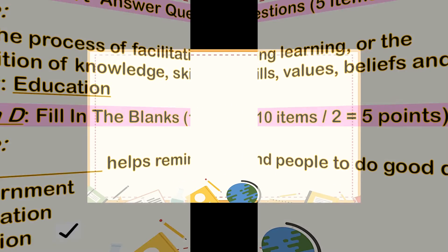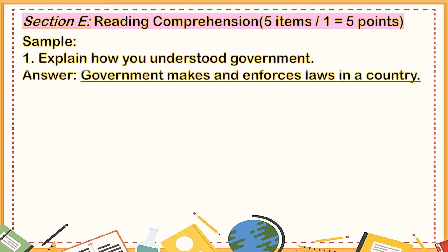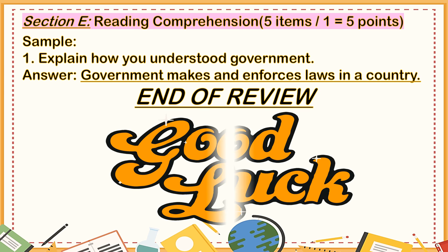For the last part, Section E is reading comprehension, 5 items divided by 1 equals 5 points. In reading comprehension, you have to read the paragraph and get your answer from the paragraph — you cannot write your own answer. I gave you a paragraph to read so I will know if you understood the comprehension. For example, 'Explain how you understood the government' — the answer is 'government makes and enforces laws in a country.' Here I am flexible; you can write your answers, and if you do not know how to spell certain words, just write what you know.